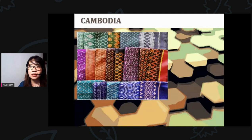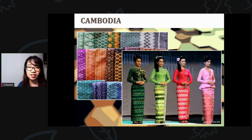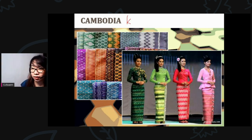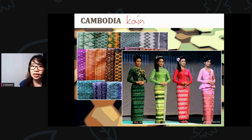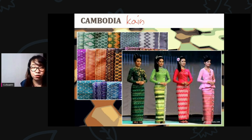The next country is Cambodia. Cambodia also has silk products. If the Philippines has kain — a wrap-around skirt from Kalinga — Cambodia has its own equivalent. Kain is the term used to refer to the wrap-around skirt of women from Kalinga, which was discussed in Grade 7.